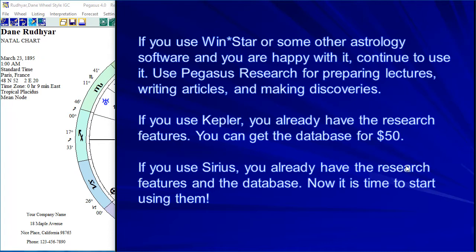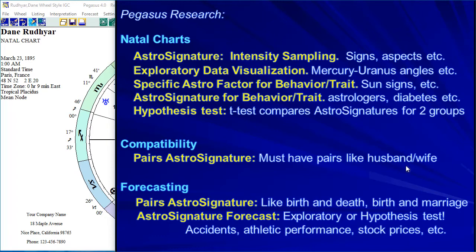In this video I'm going to focus on the most important research features in a more down-to-earth way than other videos, so if you have Kepler or Sirius you'll probably want to watch this as well. There are five kinds of research you can do on natal charts, one kind of compatibility research, and two kinds of forecasting — I'll give you a preview of what we'll be discussing. The very first one, astro signature research, is fantastic — it changes everything.